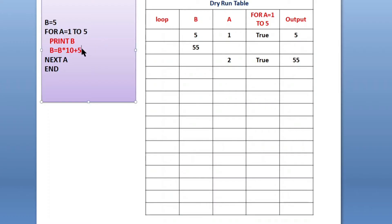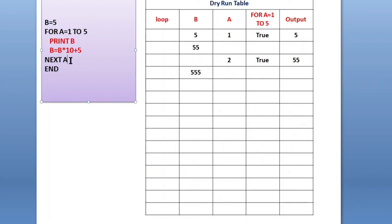Condition true, so it will print 55. After printing, again b equals to b into 10 plus 5. In the next line, b = 55 into 10 plus 5 — that is 550 plus 5, which is 555. After that, next a: increment the value of a by 1. Before value is 2, now it will be 3, because a plus 1 = 3.